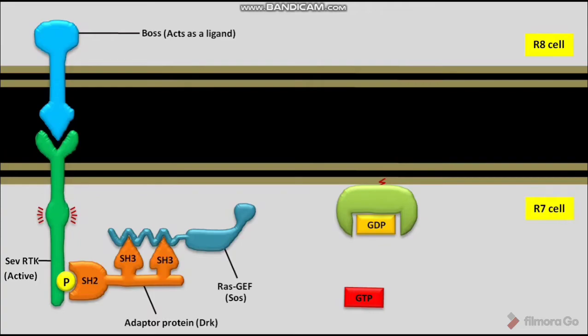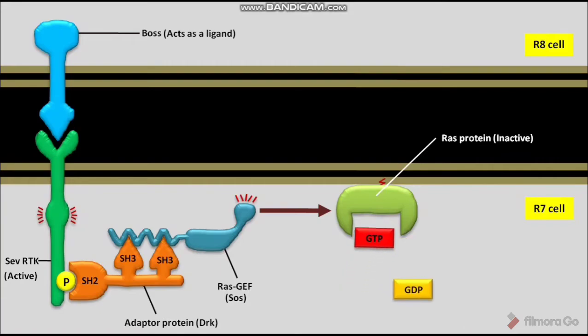Due to this binding, the Ras-GEF or SOS becomes active. The active Ras-GEF or SOS then stimulates Ras protein. The Ras protein is present in its inactive form with bound GDP. Due to this stimulation, the inactive Ras protein replaces its bound GDP with GTP.